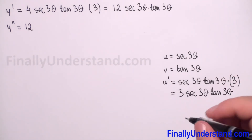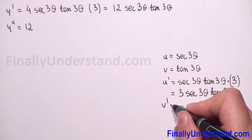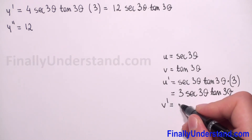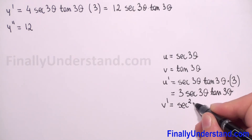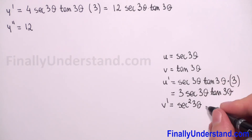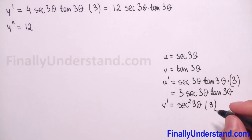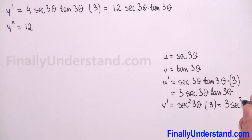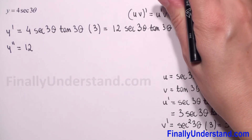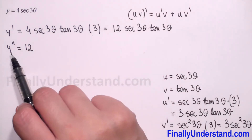Now we find the derivative of v. The derivative of v is equal to the derivative of tangent. The derivative of tangent is secant squared, so we have secant²(3θ). Again we have to find the derivative of 3θ, which is just 3. So v' is equal to 3·secant²(3θ).